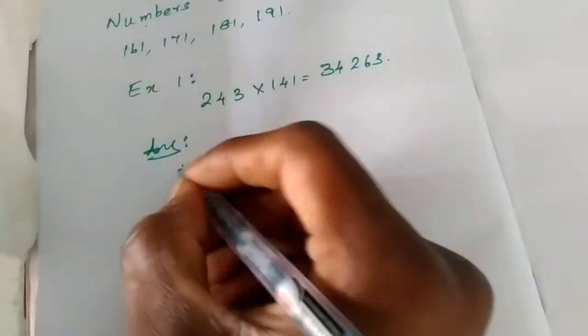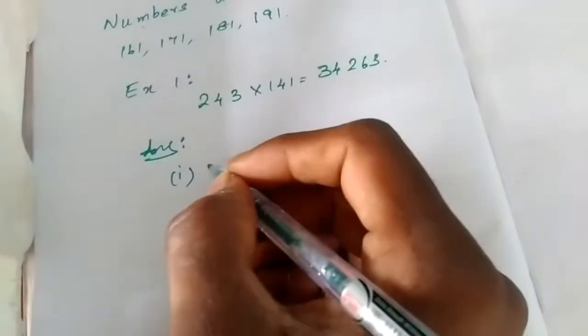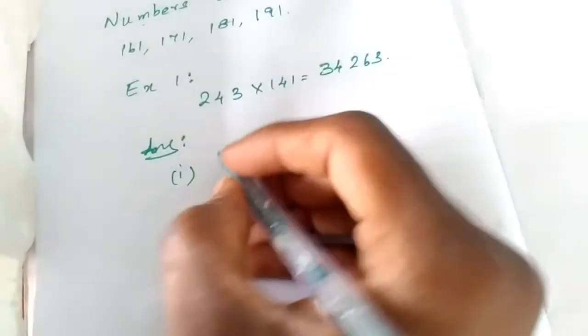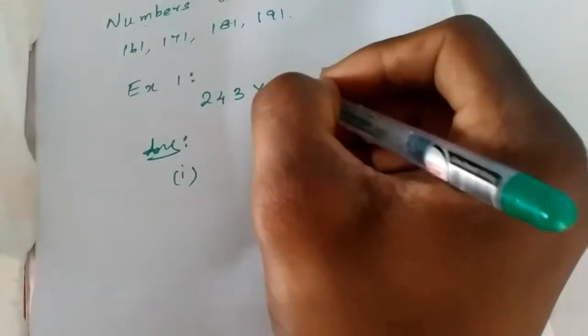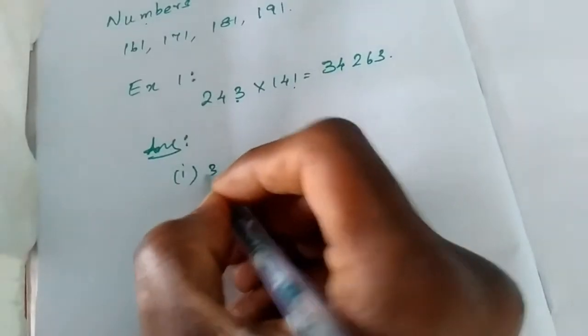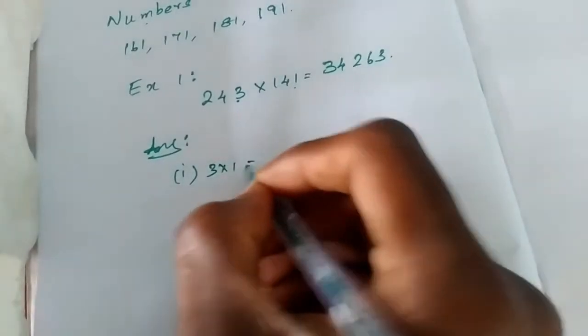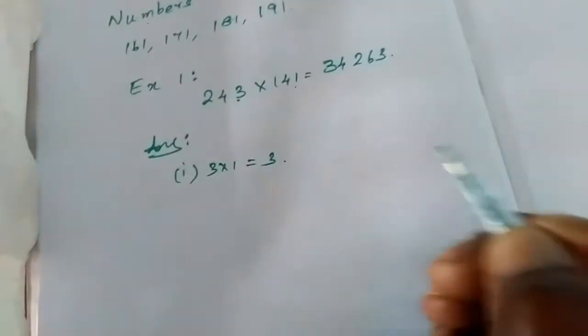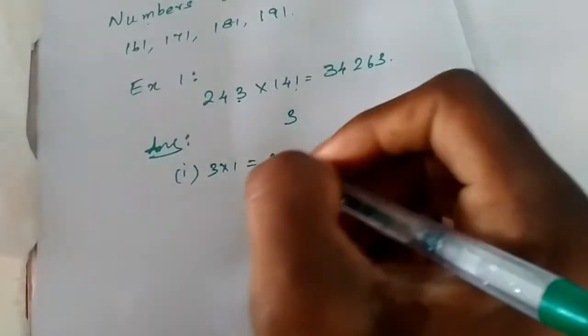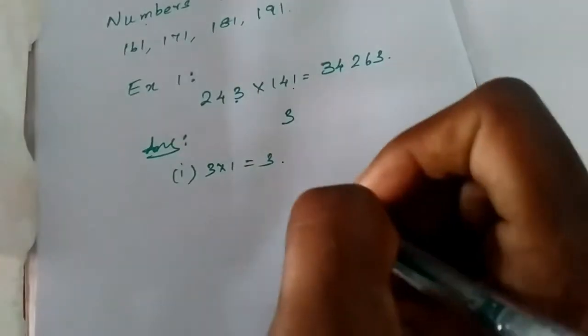First step: 1 and 3 multiply. We can multiply 3 one time. 3 × 1 is equal to 3. Answer is 3 because no carry.